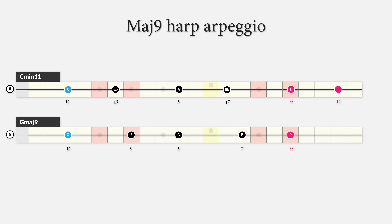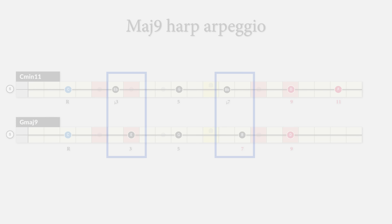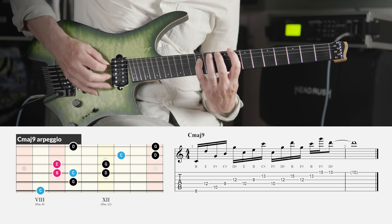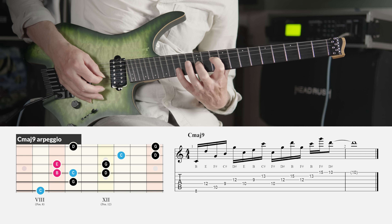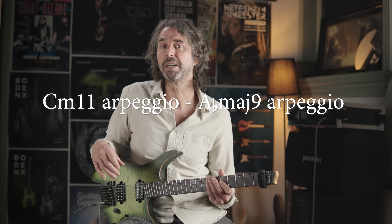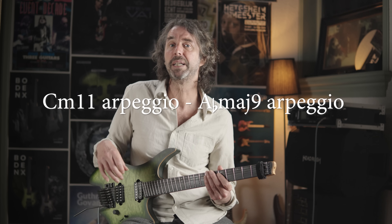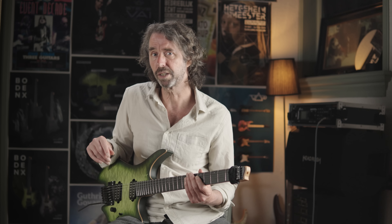We can also make a major 9 version by using a major 3rd and changing the 11th F to the 5th G, because the 11th is an avoid note in a major key. Here is the C minor 11 arpeggio followed by the chromatic submediant, the A flat major 9 arpeggio — you may remember learning about the chromatic submediant in the previous lesson.